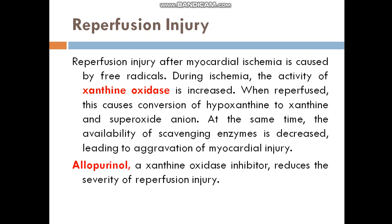Reperfusion injury after myocardial ischemia is caused by free radicals. During ischemia, the activity of xanthine oxidase is increased. When reperfused, this causes conversion of hypoxanthine to xanthine and superoxide anion. At the same time, the availability of scavenging enzymes is decreased, leading to aggravation of myocardial injury. Allopurinol, a xanthine oxidase inhibitor, reduces the severity of reperfusion injury.